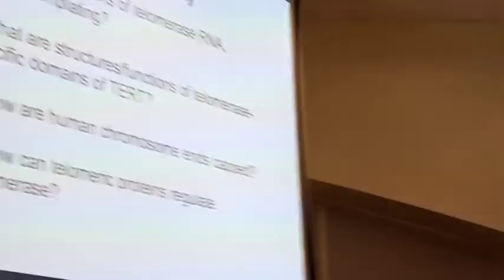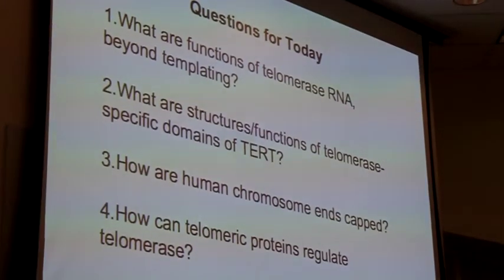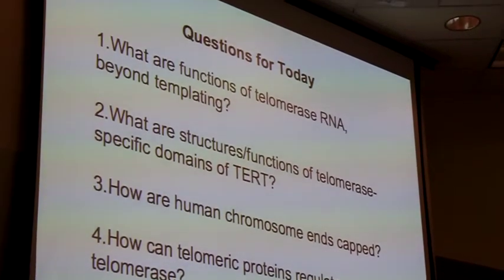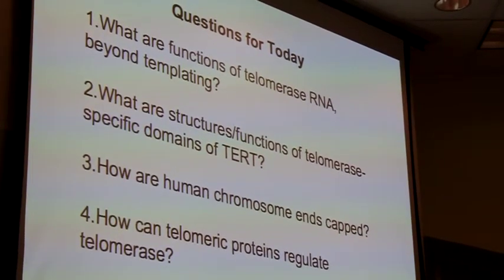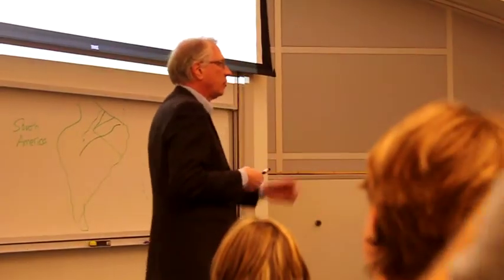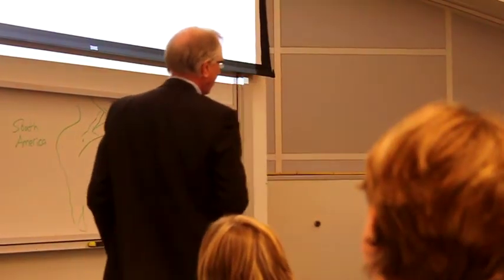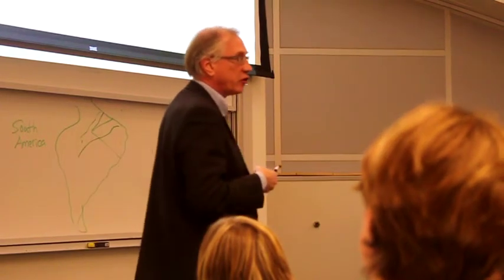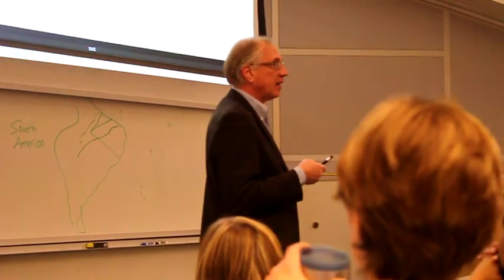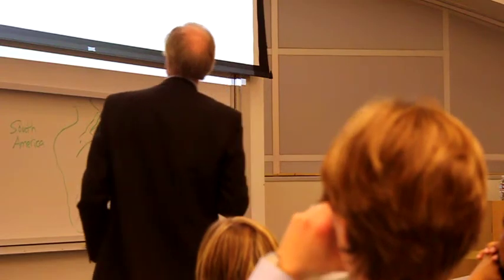The questions for today are: What does this RNA do beyond just this templating function? What are the structures and functions of the parts of the TERT that are not the reverse transcriptase active site motif? Because it's pretty obvious what it's doing in the reaction - it's catalyzing the addition of these nucleotides. But the protein is considerably larger than that and has some interesting telomerase-specific functions.